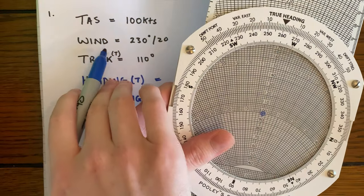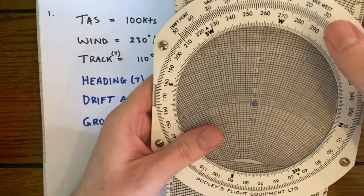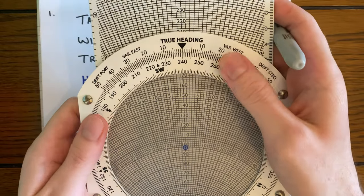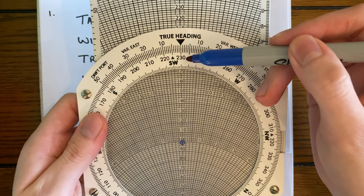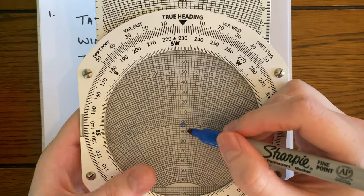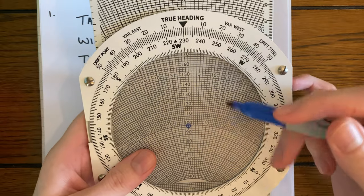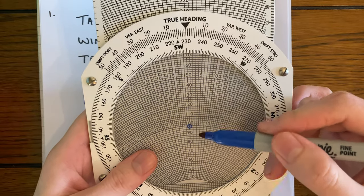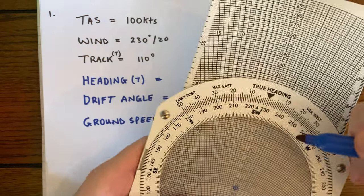Next thing to do is to plot our wind. So we can see it's 230 at 20 knots, so we're just going to turn this dial around until we get to 230. There it is. And then we're going to mark our wind 20 knots up from 100. Now I know some people teach the method of going down, but I think that adds some complications. I think this is a lot more efficient way of calculating these problems.